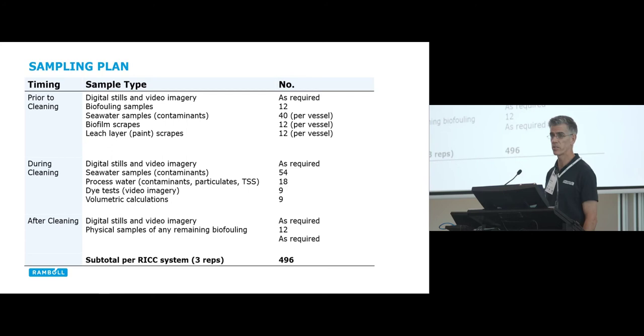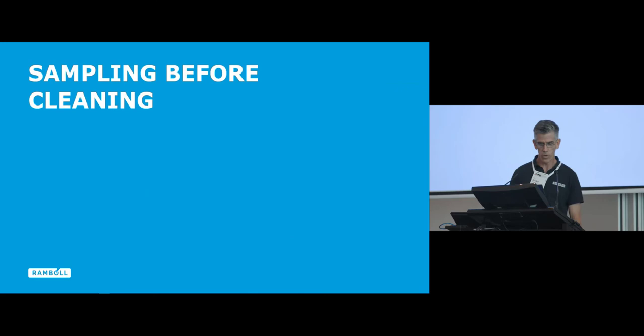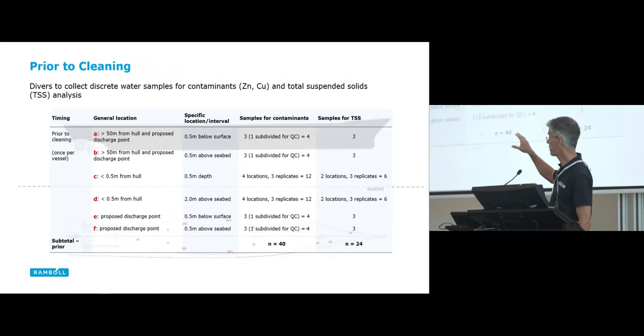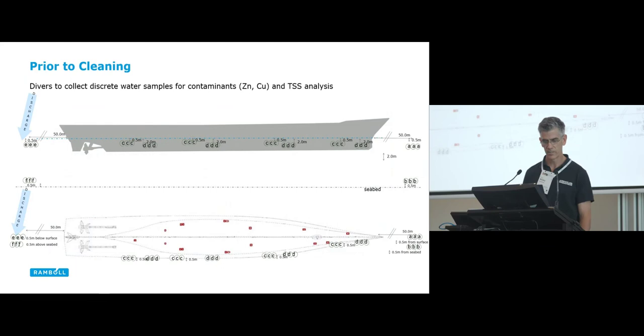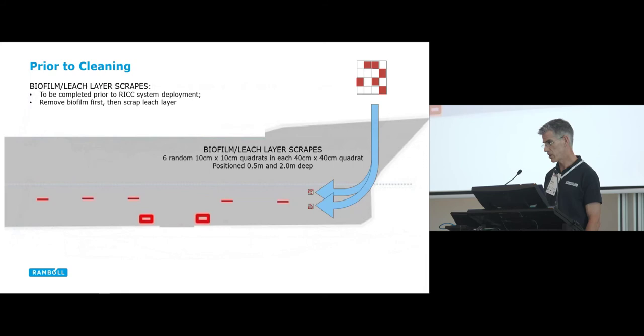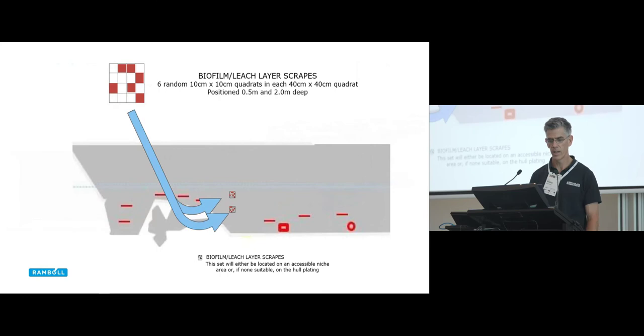The sampling plan. Basically, look at the main number at the bottom for each system, 496 samples. There's a lot of stuff happening. There's lots of moving parts to collect that many samples in a short time. And remember, we're dealing with vessels that don't want to hang around for a long period of time, so we're going at this hammer and tong for a short period. It makes it challenging in some instances.